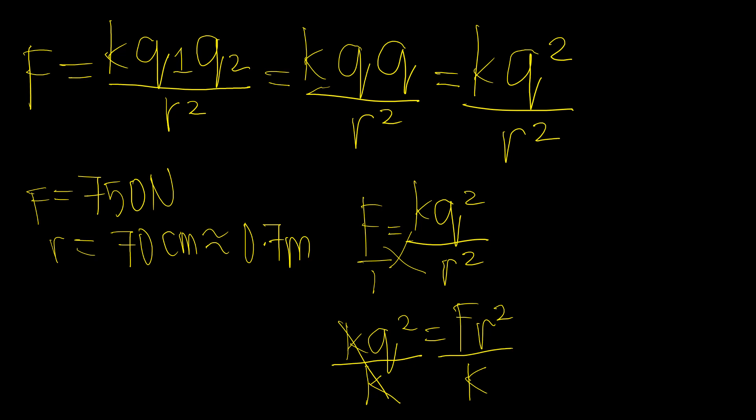So cancel out na yung K. So we have Q squared is equal to force times the distance squared over the constant. Now for us to get rid of the square,